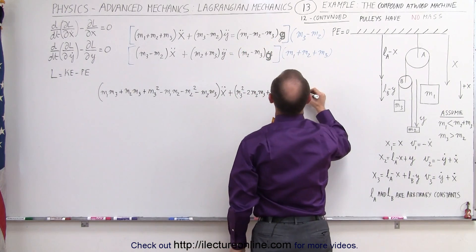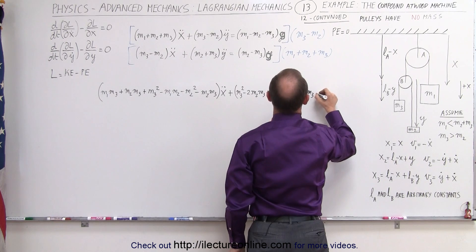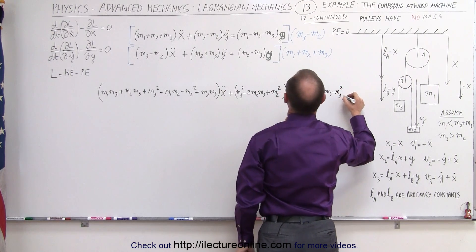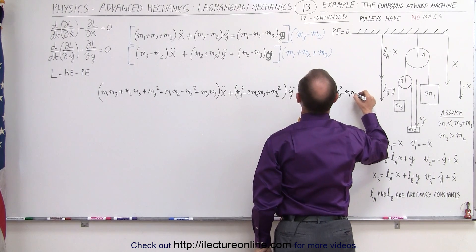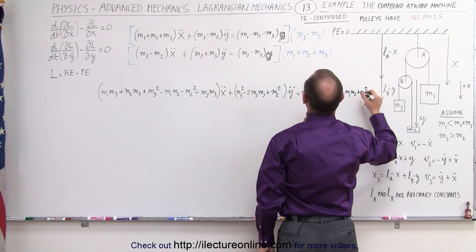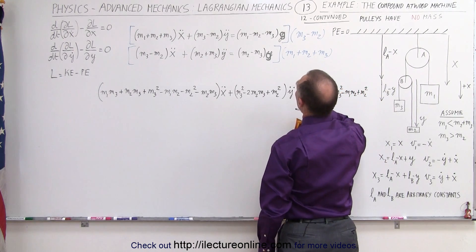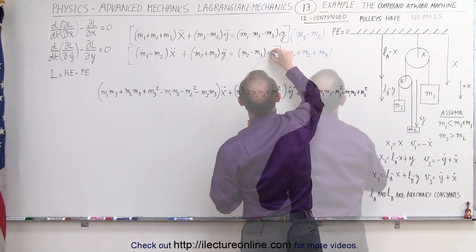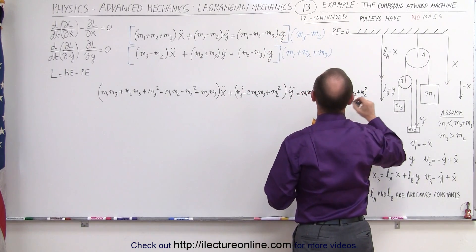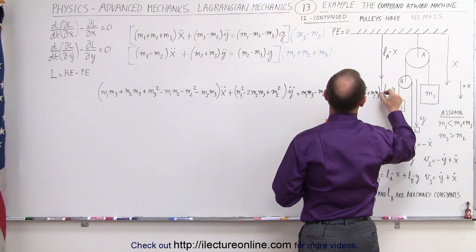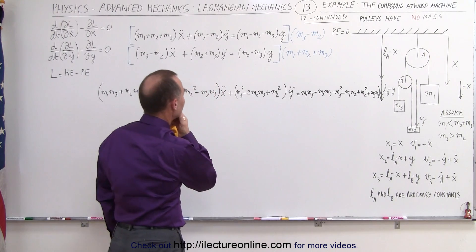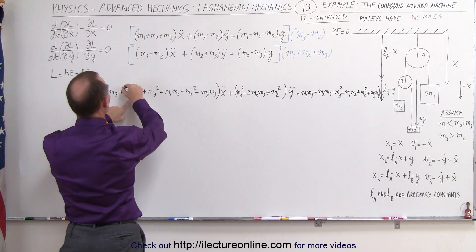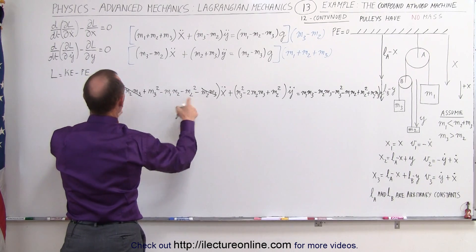Multiplying the right-hand side, we get m1m3 minus m2m3 minus m3 squared, minus m1m2 plus m2 squared, plus m2m3, times g. We can simplify right away: m2m3 minus m2m3 cancels out, and m1m3 remains. On the y double dot side, m2m3 and minus m2m3 also cancel out, making things a little simpler.